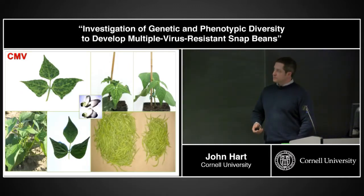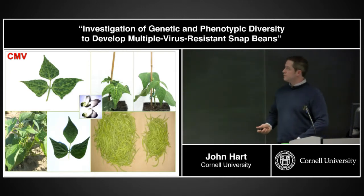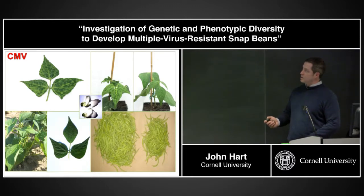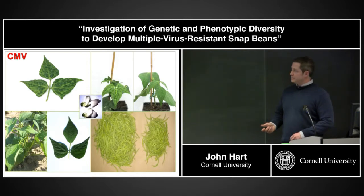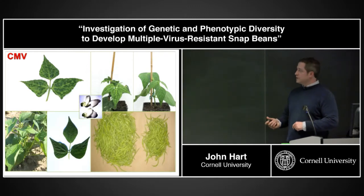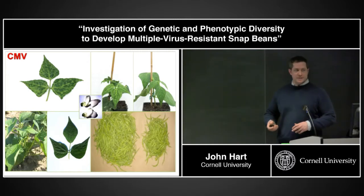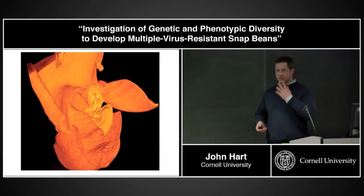Cucumber mosaic virus is the most noticeable because of its striking erumpent blistering. It also stunts the plant, and it's a complex phenotype in that plants can often grow out of symptoms after infection. You can wind up with leaves that look relatively normal but a plant that hasn't set any pods. This is due to both accumulation of the virus and movement throughout the plant, causing deformed flowers that fail to set, resulting in fewer pods of about the same size.